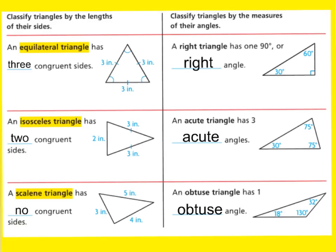Let's take a look at this chart. An equilateral triangle has three congruent sides — congruent means all the sides are the same length. With an isosceles triangle, you're going to have two congruent sides. This isosceles triangle has two sides that are three inches long and only one side that's two inches long. A scalene triangle has no congruent sides — in this example, we have a three inch, four inch, and five inch.